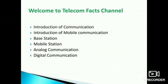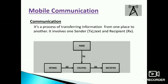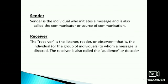Communication is a process of transferring information from one place to another. It involves one sender, that is the transmitter, and a recipient, that is the receiver. This is a typical communication block diagram — it contains four blocks: sender, channel, receiver, and noise.